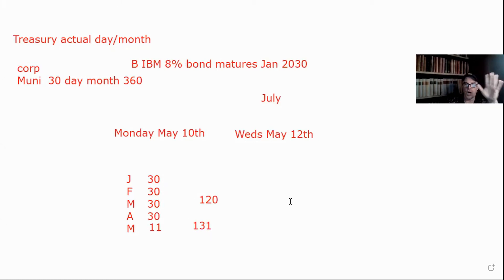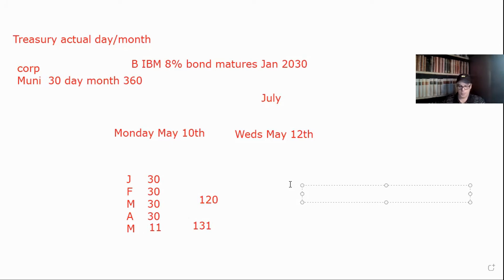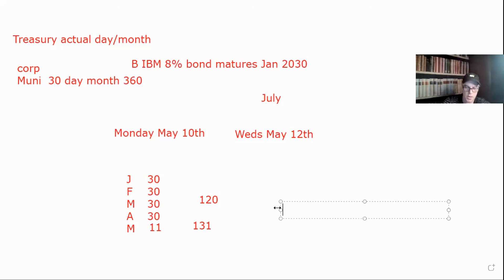That's what you owe them — 131 days of accrued interest. Now, let's say they ask how much do you have to pay them? So you take out the calculator and go: an 8% bond pays $80 a year. How many days in a year? It's 360. So $80 divided by 360 is about 22 cents a day. For every day that you own it, this person's getting 22 cents per bond. So 22 cents times 131 days gives me $29.11. So you have to pay this person $29.11 of accrued interest.